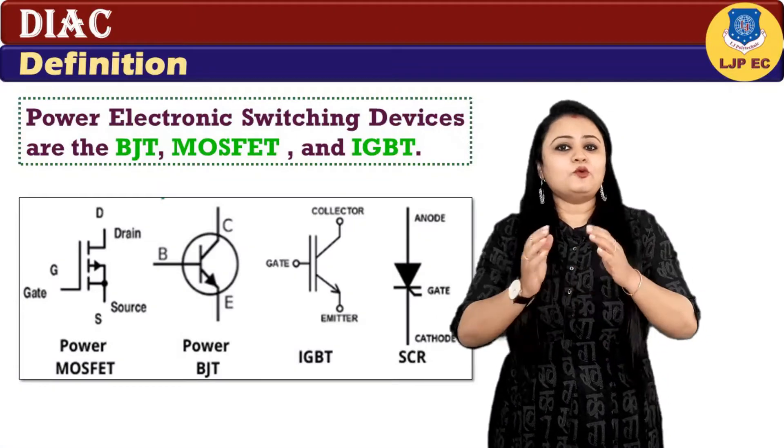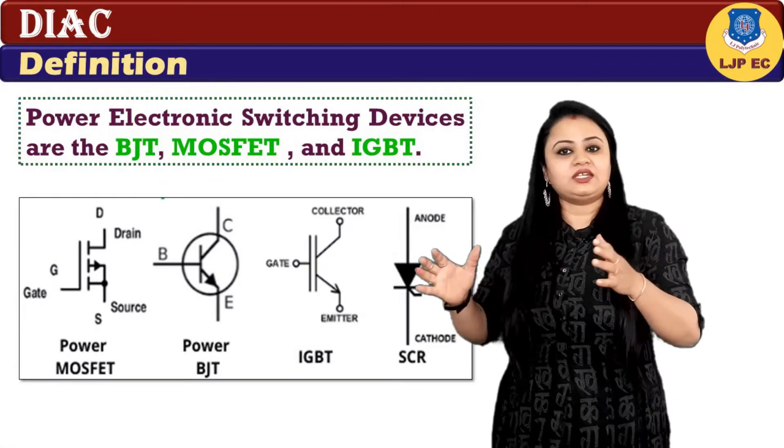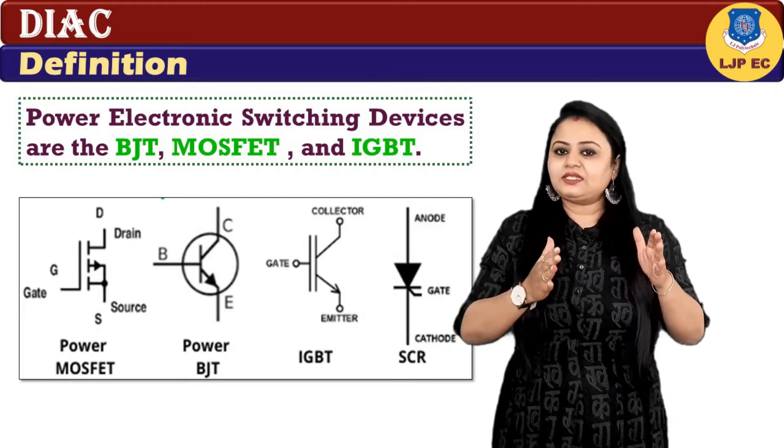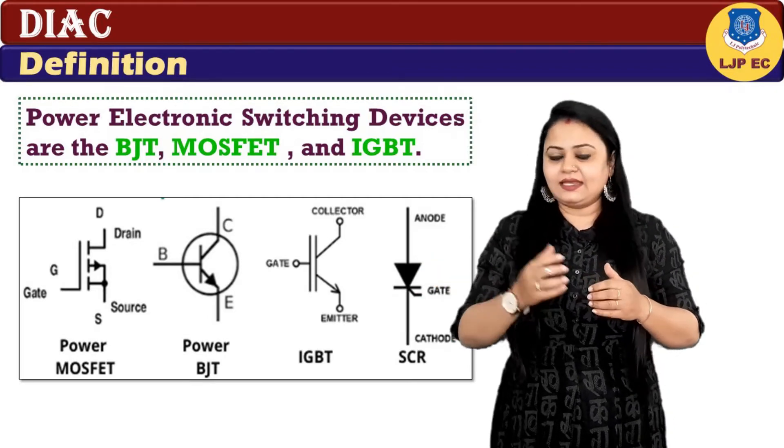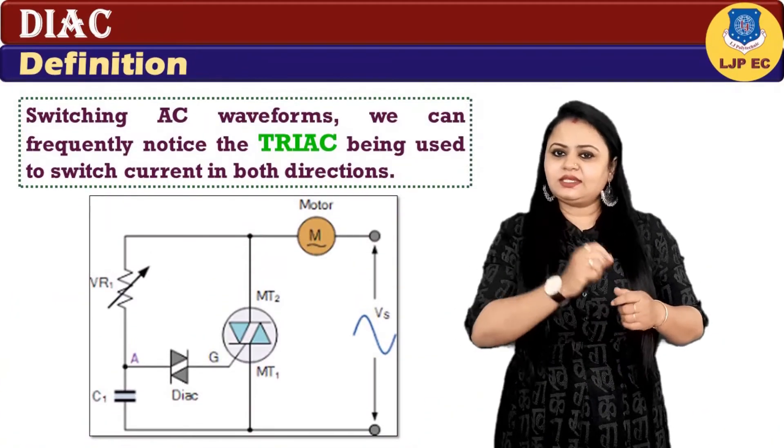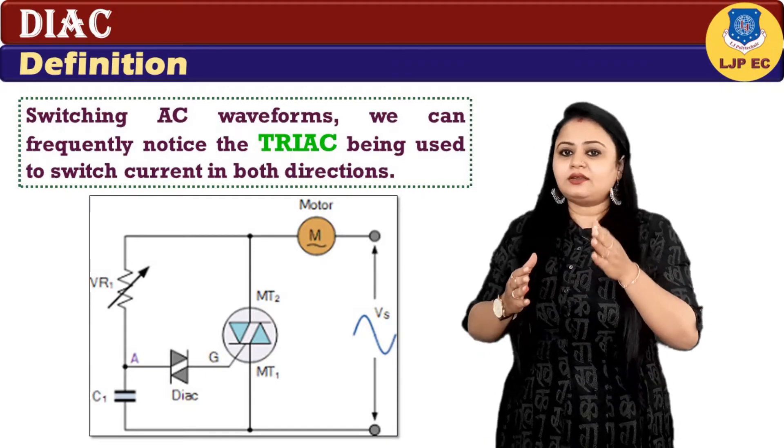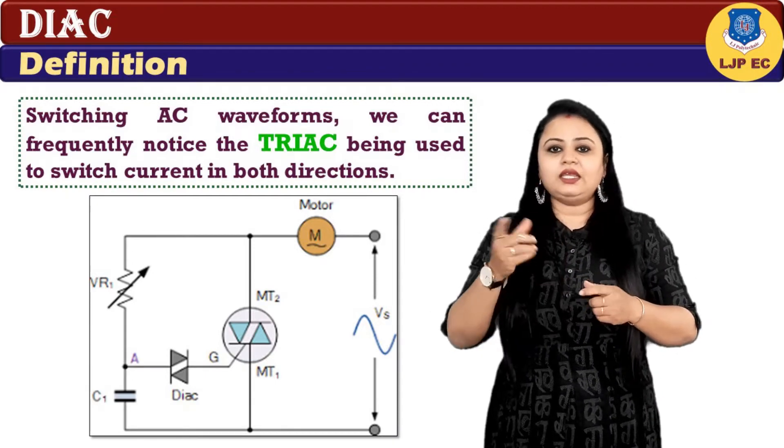Do you know that the most popular and commonly used power electronic switching devices are BJT, MOSFET, and IGBT? But when it comes to switching AC waveforms, we can frequently notice the TRIAC being used to switch current in both directions.